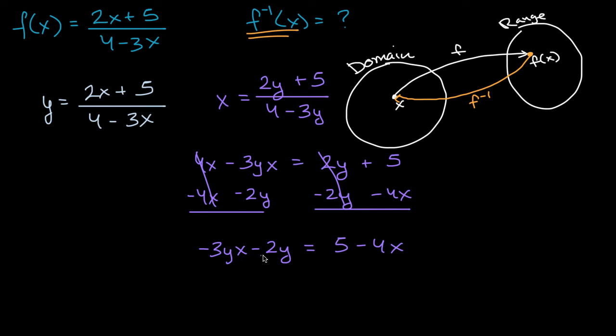Now, once again, we are trying to solve for y. So let's factor out a y here. And then we are going to have y times negative three x minus two is equal to five minus four x.